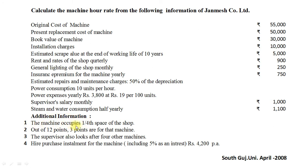Additional Information: 1. The machine occupies 1/4th space of the shop. 2. Out of 12 light points, 3 points are for that machine. 3. The supervisor also looks after 4 other machines. 4. Higher Purchase Instalment for the machine includes 5% interest, Rs 4,200 per annum. This particular example is from South Gujarat University, April 2008 Examination.